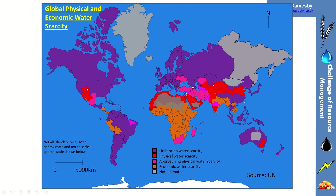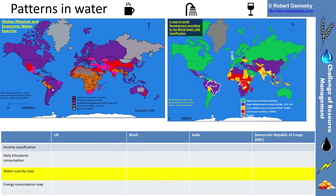In terms of water scarcity, there are two different types: physical and economic. Physical scarcity is when it simply doesn't rain enough — there isn't enough precipitation to meet the needs of the people who live there, shown in red. The orange areas show economic water scarcity: those areas do have water and precipitation, but there isn't the financial ability to produce safe drinking water for people. Large parts of sub-Saharan Africa have economic water scarcity. Brazil largely has little or no water scarcity, with a patch in the northeast of physical water scarcity.